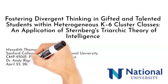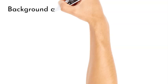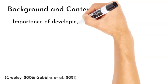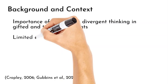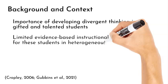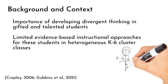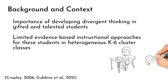Research indicates that fostering divergent thinking, a key component of creative thinking, is crucial for gifted and talented students' intellectual and personal development. However, there is a lack of evidence-based instructional approaches specifically designed for these students within heterogeneous K-6 cluster classes where diverse learners are grouped together. This gap in research necessitates an investigation into effective strategies that can address the unique needs of gifted and talented students in these settings while promoting their divergent thinking skills.